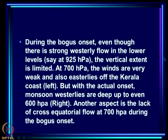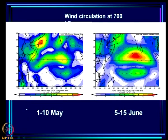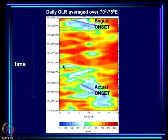During the bogus onset, even though there was strong westerly flow in the lower levels at 925 hPa, the vertical extent was limited — at 700 hPa the winds were very weak with easterlies off the Kerala coast. With the actual onset, monsoon westerlies were deep, extending up to even 600 hPa. Another key aspect is the lack of cross-equatorial flow at 700 hPa during the bogus onset; by June it had become established.